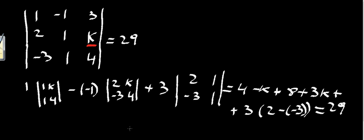If I rewrite that expression, we have 4 minus k, plus 8, plus 3k, plus 6, which is my 3 times 2, and this minus minus becomes a plus, so it's plus 9 equals 29.